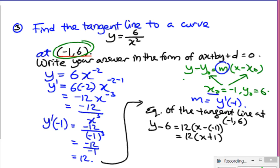Therefore, simplifying this gives me 12x plus 12 and then plus 6, which is y equal to 12x plus 18. And here's the answer.